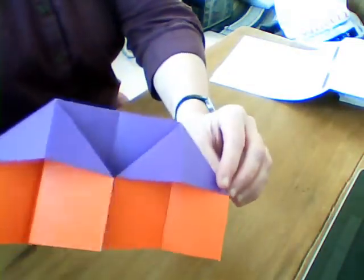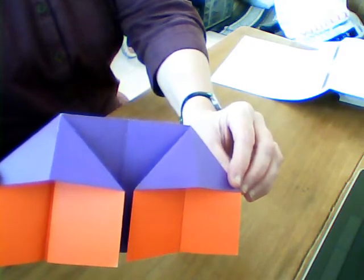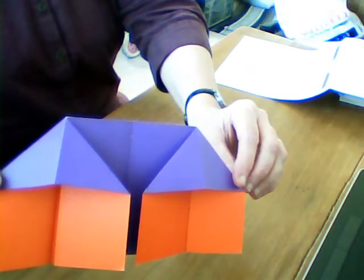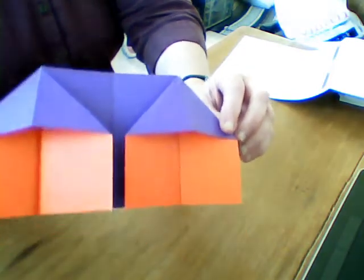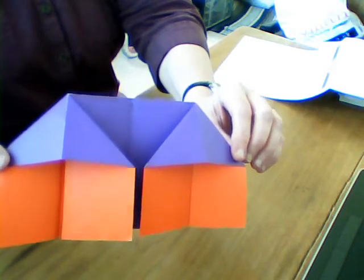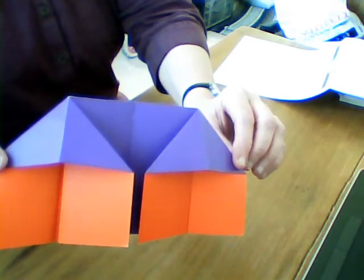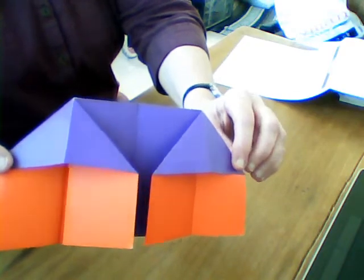Then there you go, you've got your semi-detached houses. You can put windows and doors on, stuff on the roof if you want, whatever you like. That is sufficient as a simple bit of origami to tick you off for your My World activity on this particular thing.